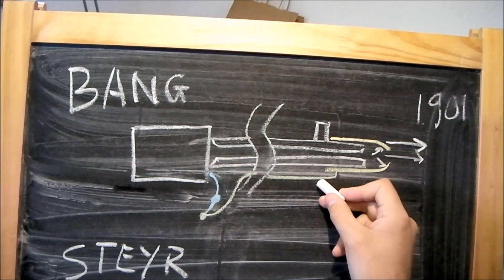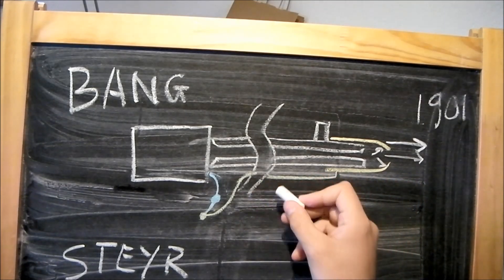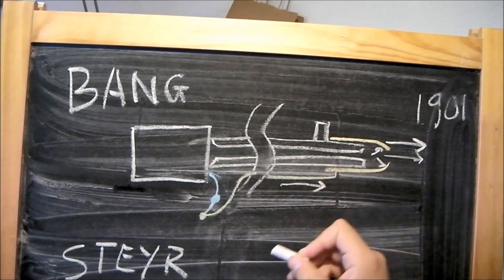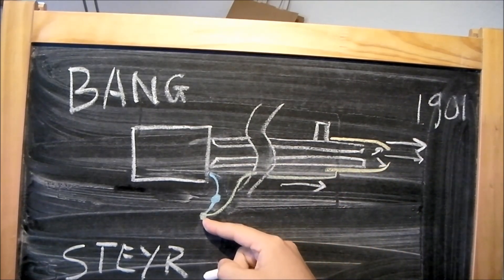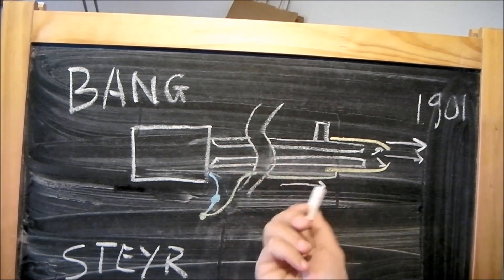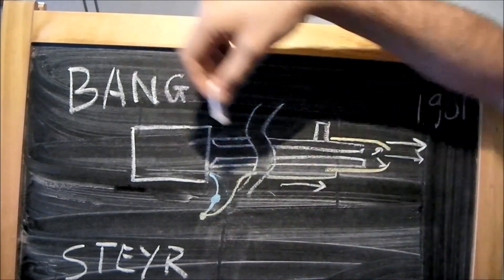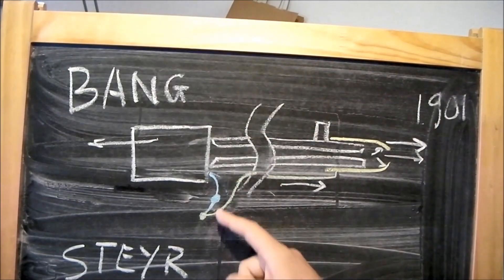Now there's a connecting rod that runs back under the stock. That is also pulled forward. There's a lever pivoted on the action which converts the forward movement of the operating rod into a rearward kick onto the breech block which then goes backwards.